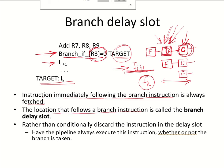If we have a branch instruction, the instruction or the location which follows it is called the branch delay slot. Whatever instruction is in the branch delay slot will always be fetched. So there is a possibility that this instruction will be discarded if we have to take the target address, or executed if we don't branch out. Rather than conditionally discarding it, can we place an instruction in the branch delay slot which will always be executed?